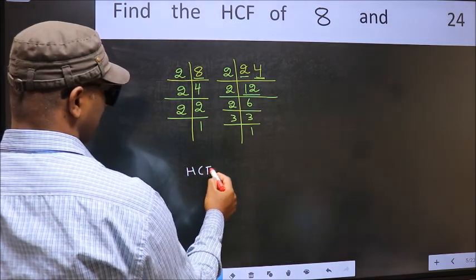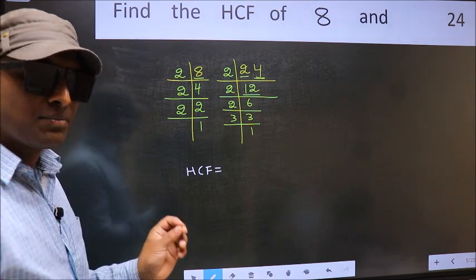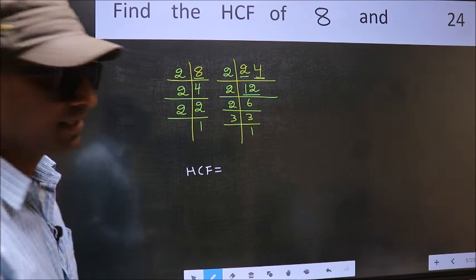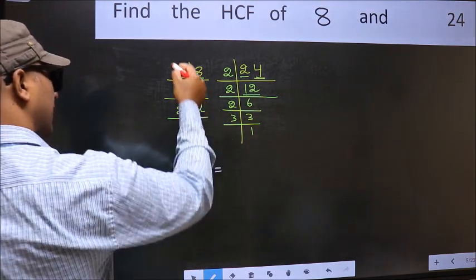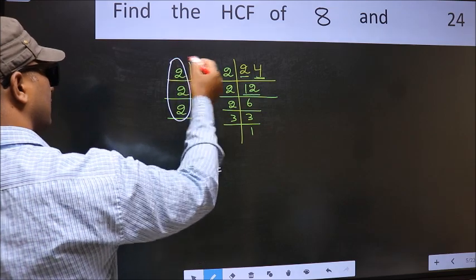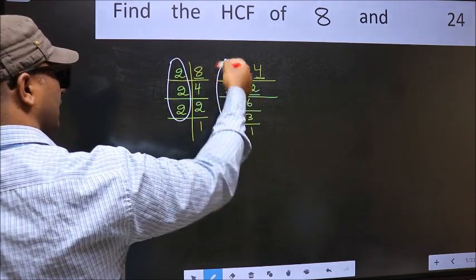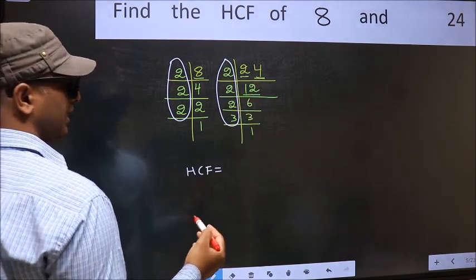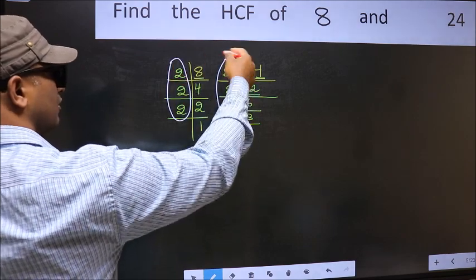Therefore our HCF is the product of the numbers which should be present in these two places. That is here and also here. Here and here. So now let us find the numbers which should be present here and also here.